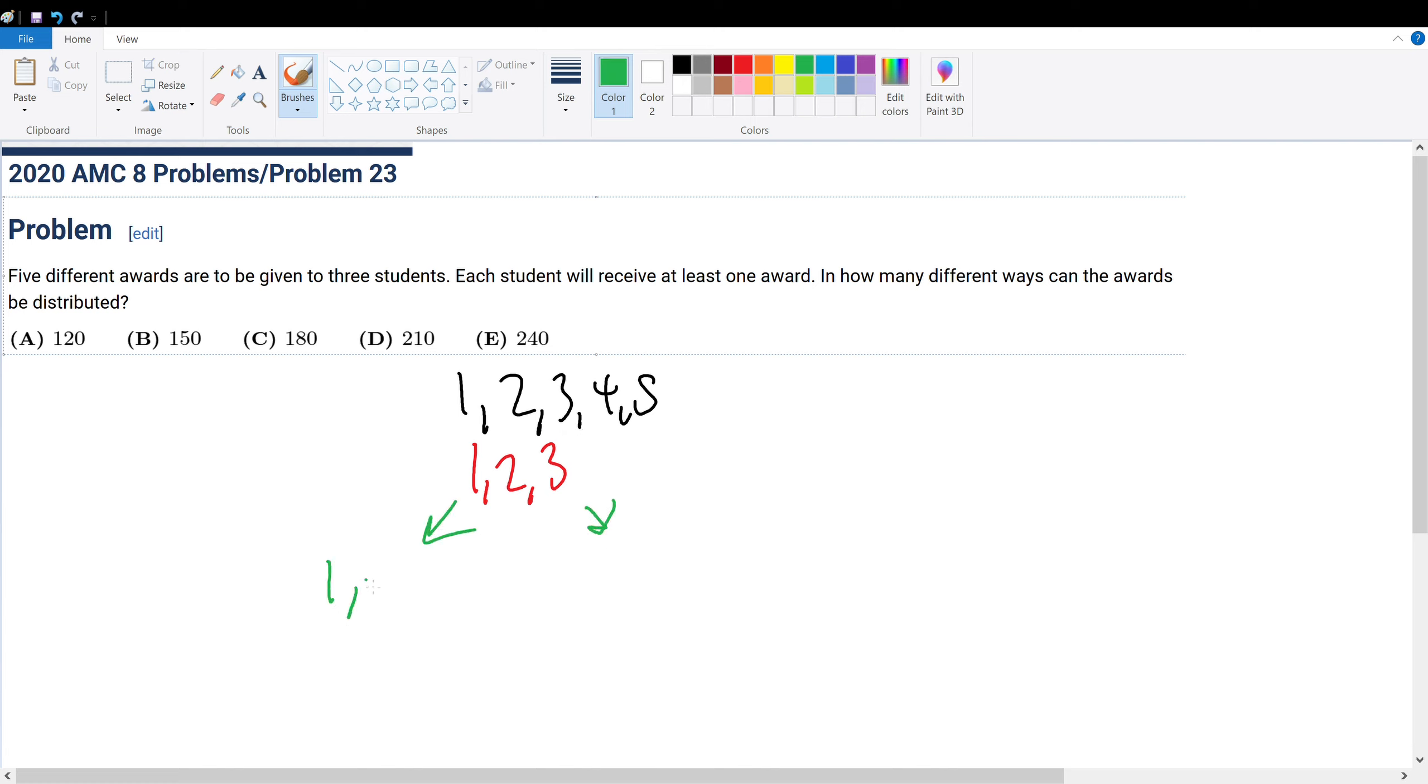We could give it out like this, where one student gets one prize, another student gets two prizes, another student gets two prizes. And we could also give it out where one student gets three prizes, another gets one, and another gets one. There isn't any other way we could give out prizes to make it work, where they add up to five. So we have two test cases to consider.